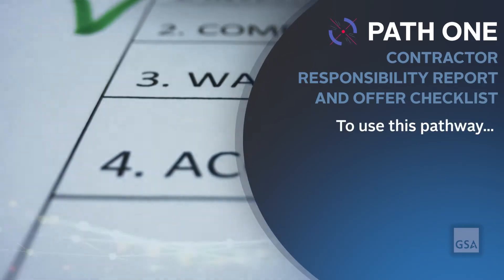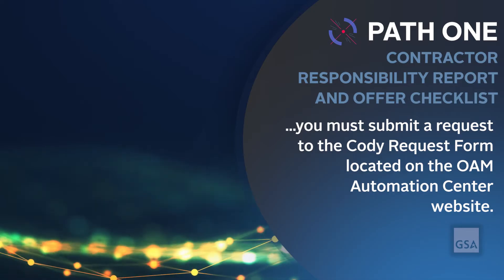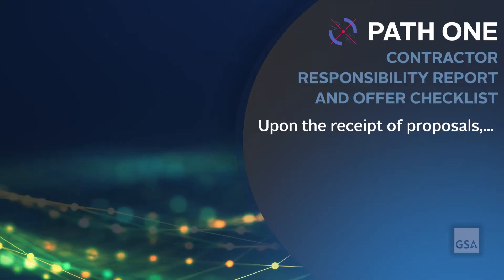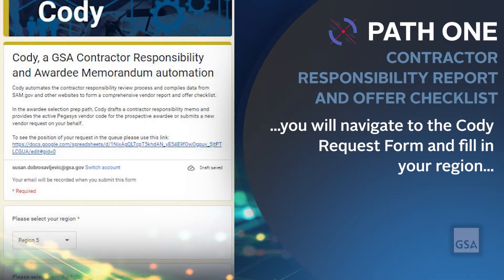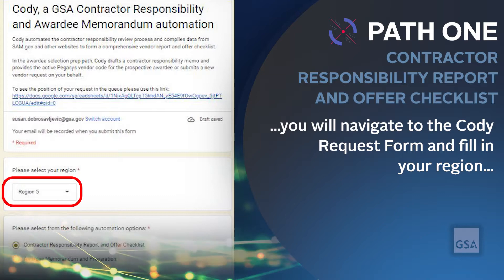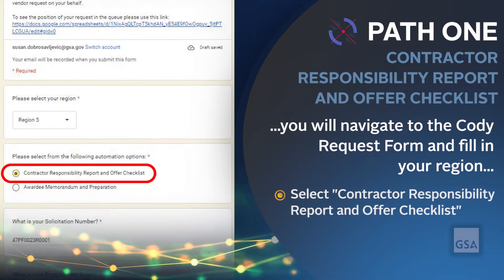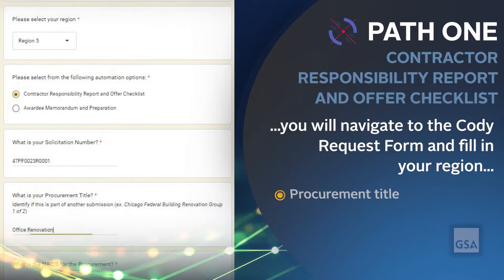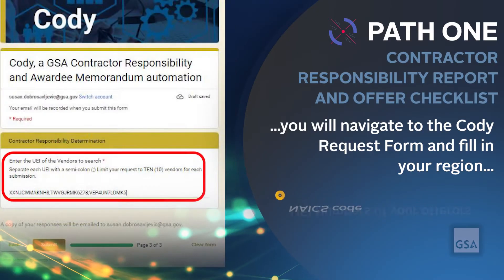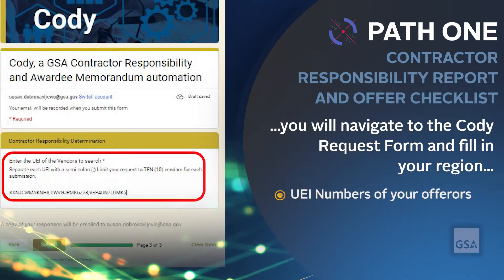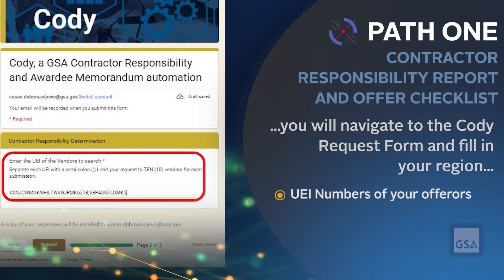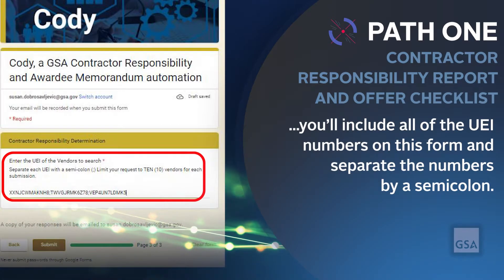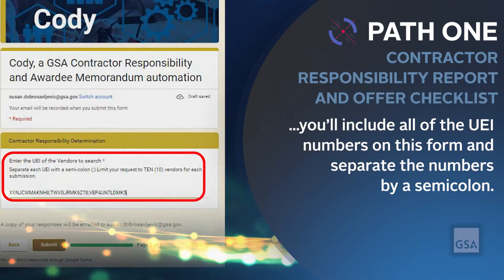To use this pathway, you must submit a request to the Kodi request form located on the OAM Automation Center website. Upon receipt of proposals, navigate to the Kodi request form and fill in your region, select contractor responsibility report and offer checklist, fill in your solicitation number, procurement title, NAICS code, and unique entity identifier or UEI numbers of your offerors. If you have received multiple proposals, include all UEI numbers on this form and separate the numbers by a semicolon.